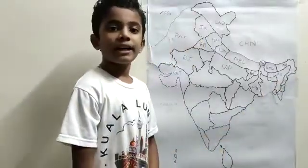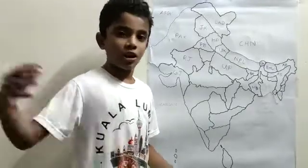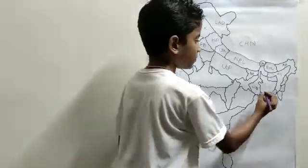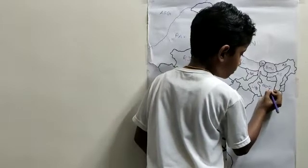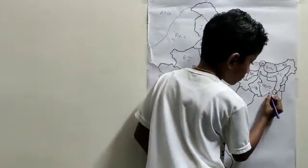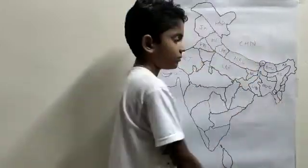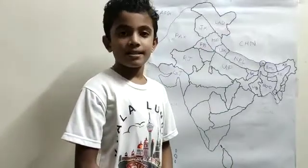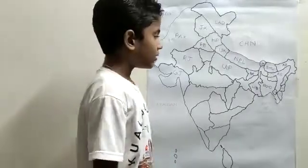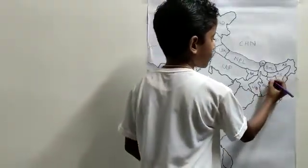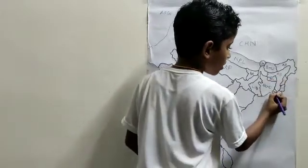Next, in the east, Bangladesh is sharing borders — and Bangladesh is sharing the longest border with India. Capital: Dhaka. Currency: Taka. The major language spoken: Bengali. Bangladesh is sharing borders with West Bengal, Assam, Meghalaya, Tripura and Mizoram.